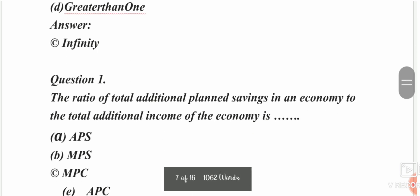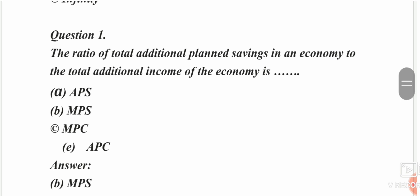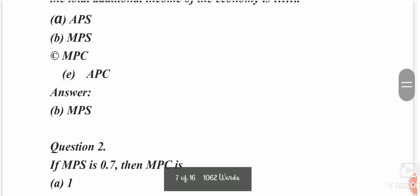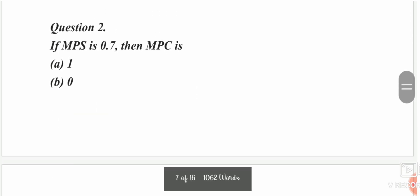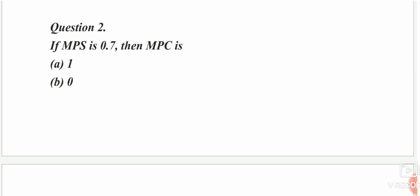Chapter four. The ratio of total additional planned savings to national additional income of the economy — the options are APS, MPS, MPC, or MPC. The answer is MPS. If MPS equals 0.7, then MPC equals 0.3.